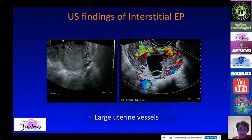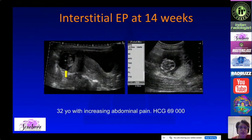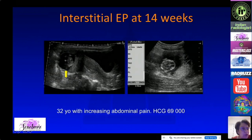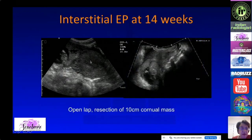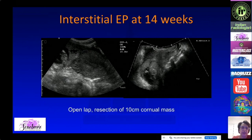This is an advanced case — the patient was 14 weeks pregnant with increasing abdominal pain. The pregnancy is eccentric and positioned above the level of the uterus, making it clearly not intrauterine. Both transabdominal and vaginal studies demonstrate how eccentric this ectopic pregnancy is, with no myometrium on one side. She required surgical removal of a 10-centimeter corneal mass via open laparotomy.